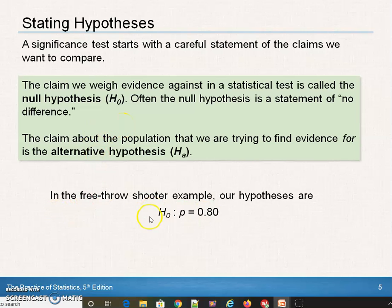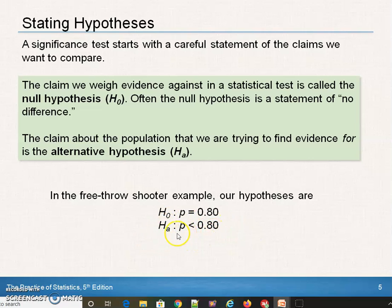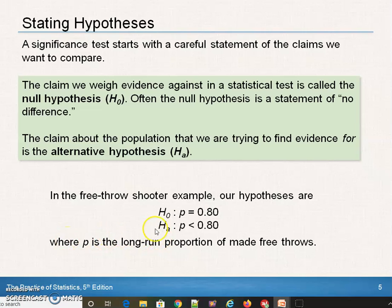In the free throw shooter example, the null hypothesis is that P, the proportion of made free throws, equals 0.8, or 80%. The alternative is less than — it could be not equal to, but we're thinking strictly less than here. So the alternative is that the proportion of free throws made is less than 0.80. The null hypothesis always uses equals. The alternative could be less than, greater than, or not equal to. One-sided less than is a left tail test; greater than is a right tail; not equal to is two-tailed or two-sided.